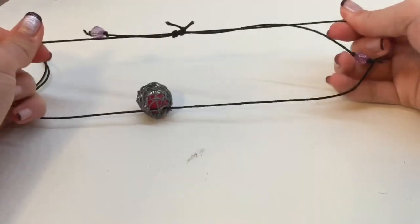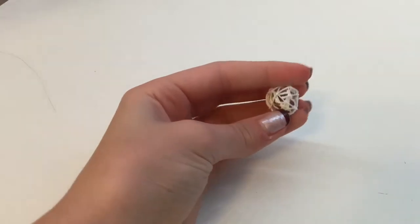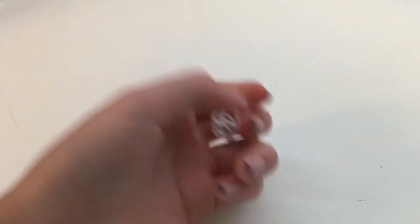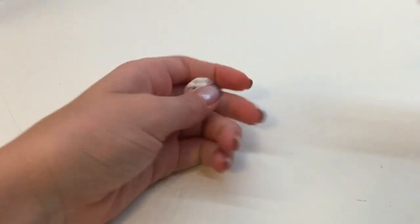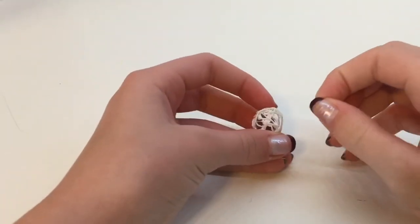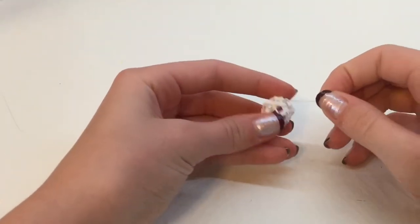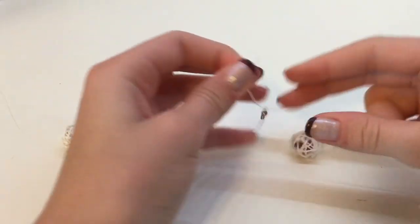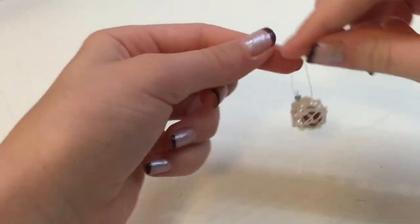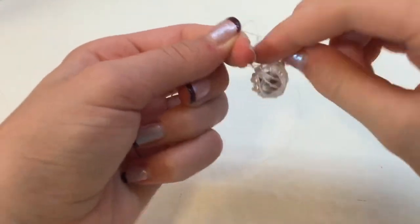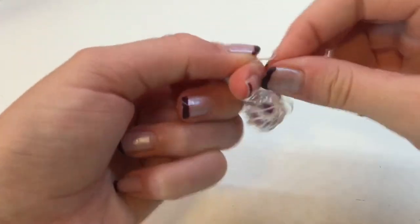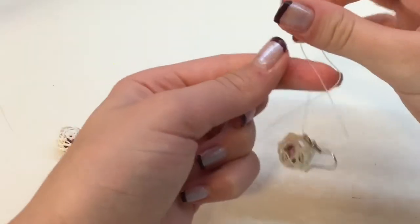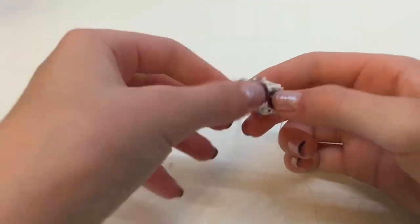Now for the earrings, you want to take this stretchy clear thread and put it through two of the openings. Then you're going to tie it with the little earring end through the little loop that it comes with. You want to do a couple knots to really make sure it's secure.